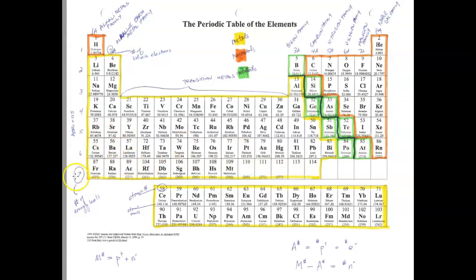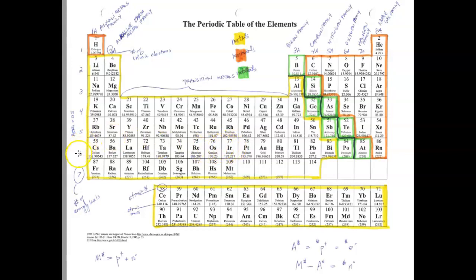Period numbers actually represent the number of energy levels that every element in that particular period has. For example, hydrogen is in period 1, so it only has one energy level. Iridium is in period 6, so it actually has six energy levels.